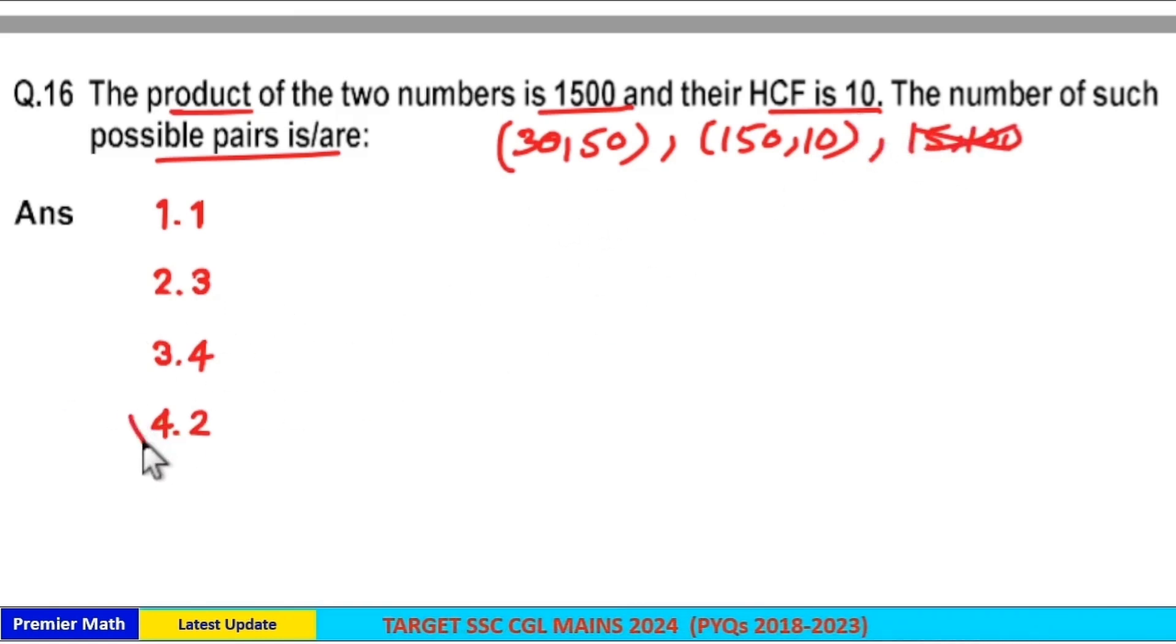Now, only two such pairs are possible. Option 4 is your answer. But if you get larger numbers, you need a proper explanation to solve such questions.